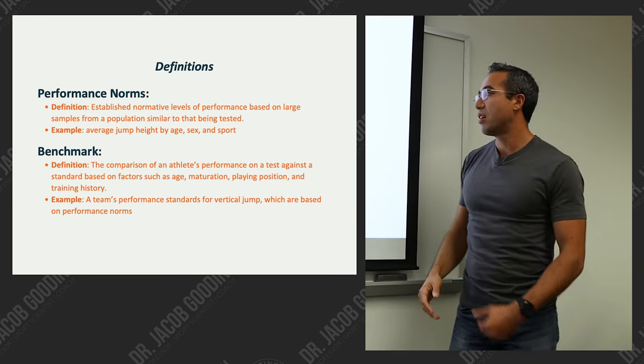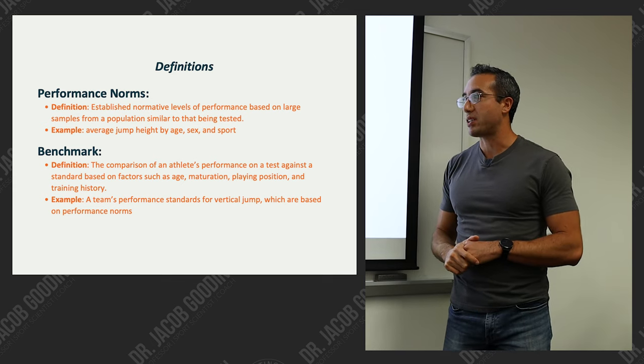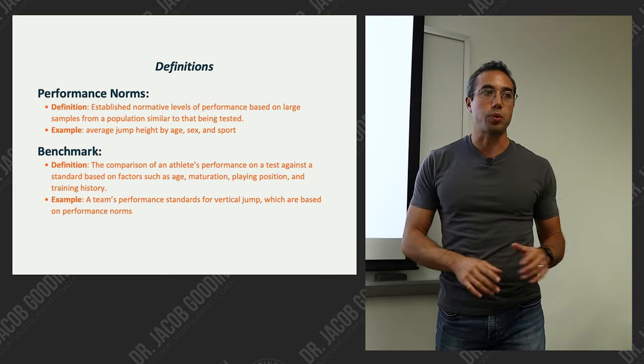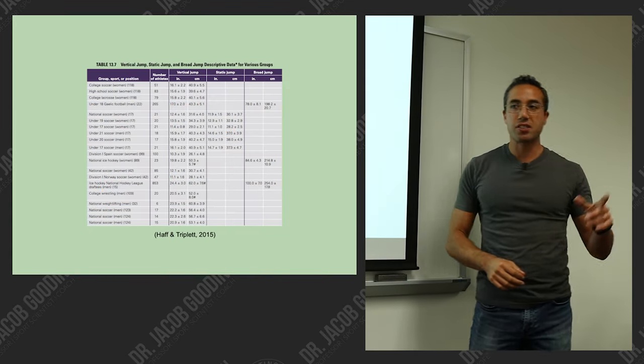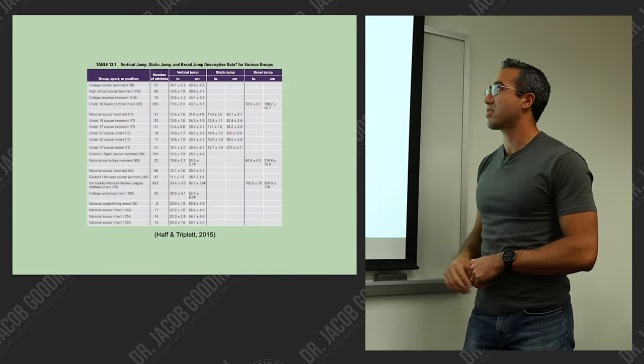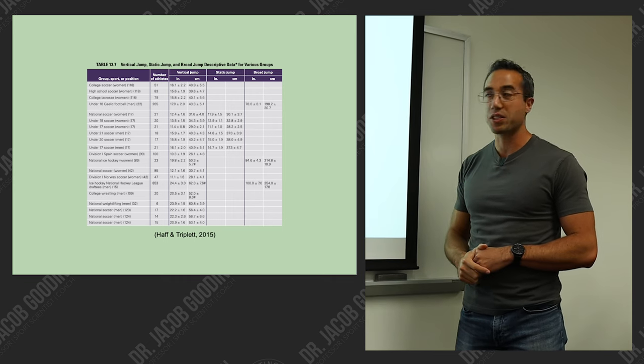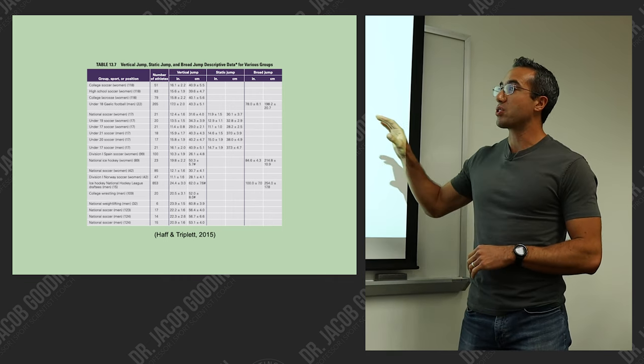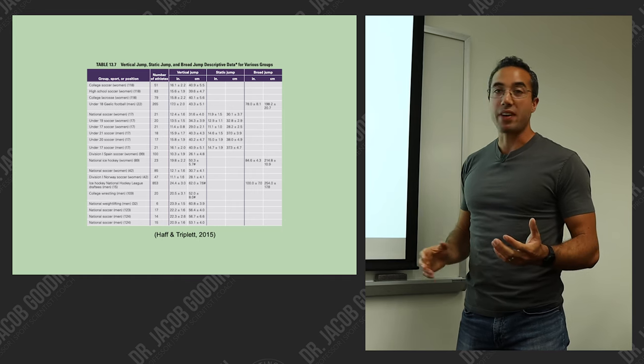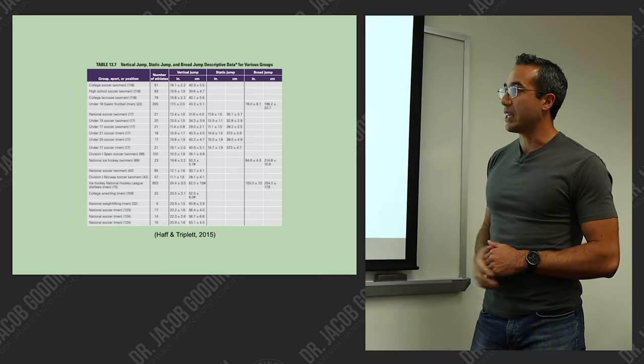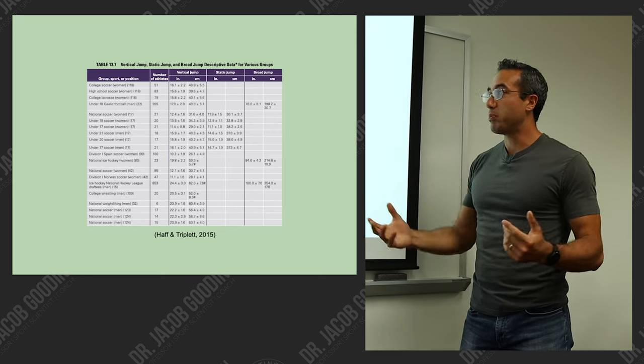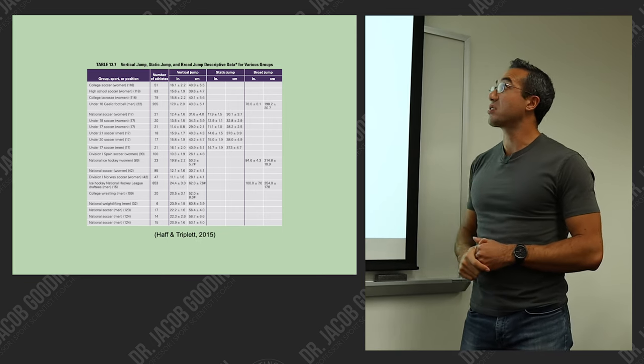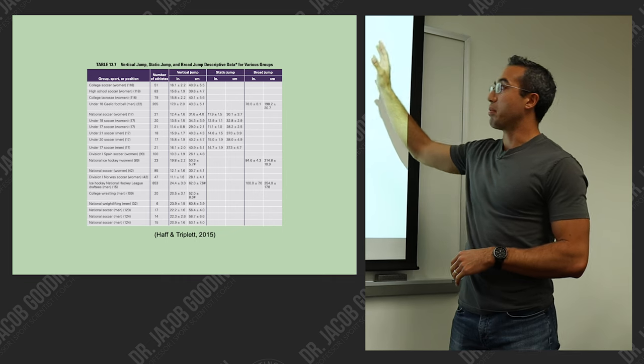Example: a team's performance standards for vertical jump, which are based on the norms for that sample. Here's an example from the NSCA, in the Essentials of Strength and Conditioning textbook. These are performance norms for a variety of different types of athletes: soccer players, hockey players, wrestling, weightlifting, men and women, different age groups. And you can see vertical jump, static jump, and broad jump.